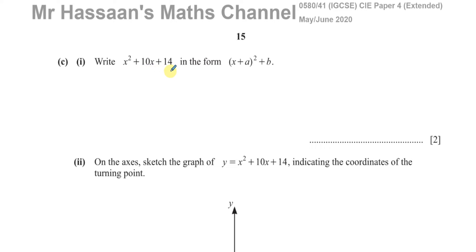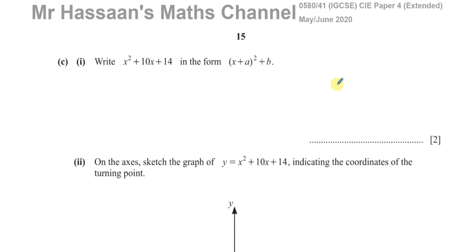The question asks us to write x squared plus 10x plus 14 in the form (x + a)² + b. So what we need to do is complete the square — that is, rewrite the expression in this specific form.